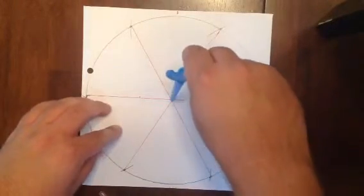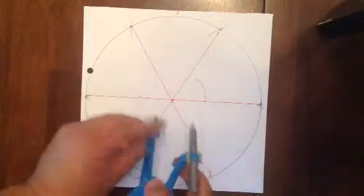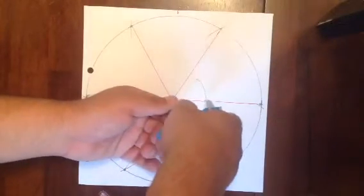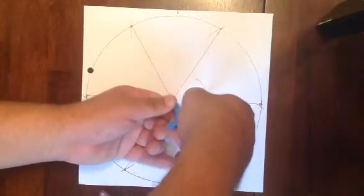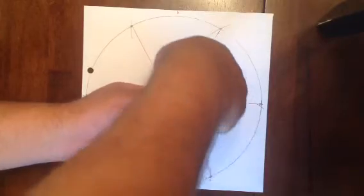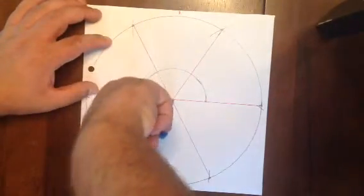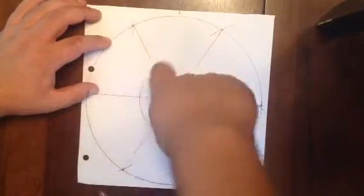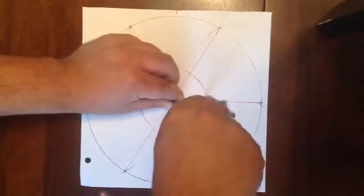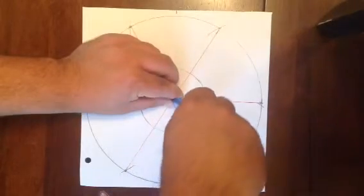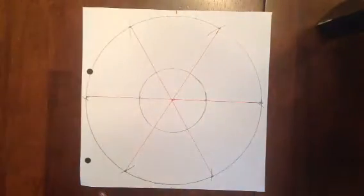And I'll try to draw, gotta hold this still. There we go. And so that's the circle that's concentric to the big circle, but it only has a radius of three.